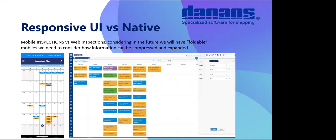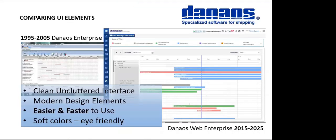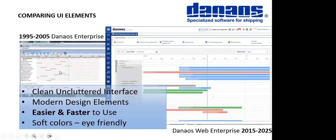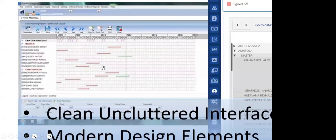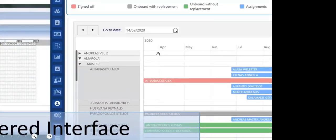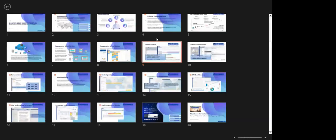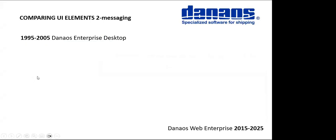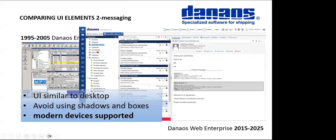Here is an example — a Gantt chart presented 20 years ago in a desktop application and how it can be shown today in a web application. Similarly, in other applications, we now have tools on the web to do things that were not possible before because technology advances and we have more tools.